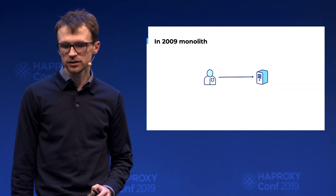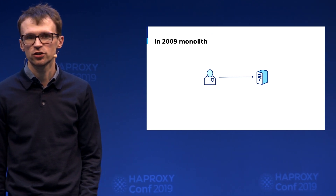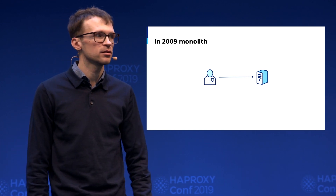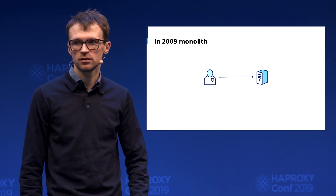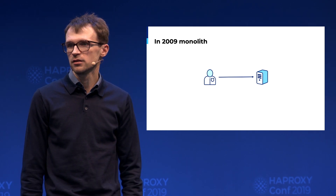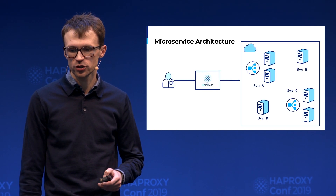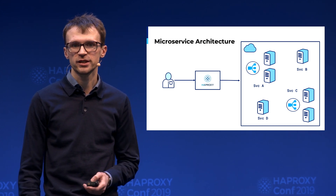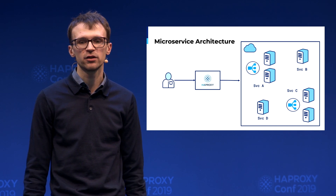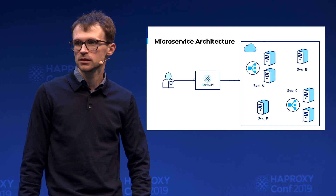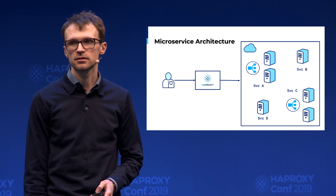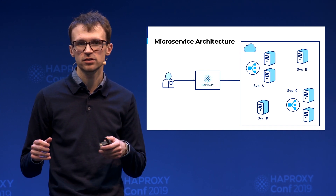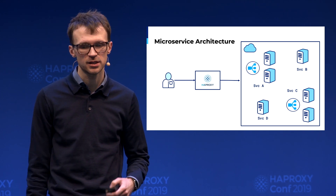We started in 2009 as a monolithic application written in Ruby on Rails, running on one dedicated server. But over time we grew as a company and migrated to a microservices architecture deployed in Amazon Cloud. And here is where HAProxy came into play, because it acts as our main routing point, delivering requests to microservices based on URL prefix, host names, and so on.